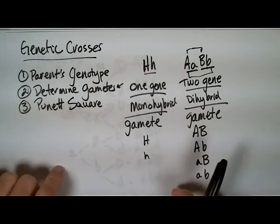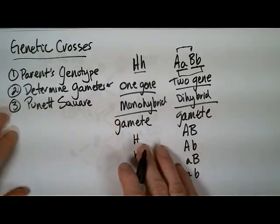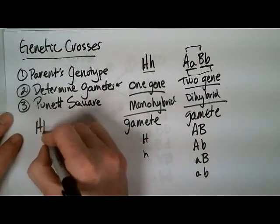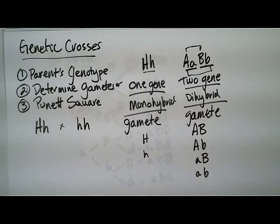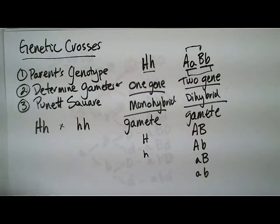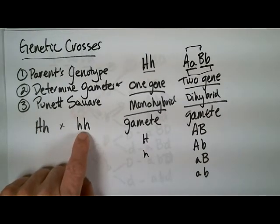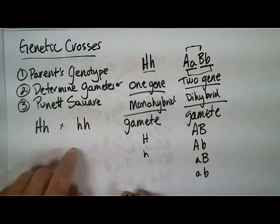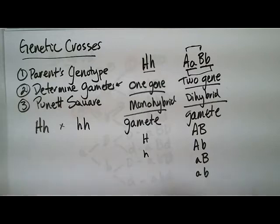So once we have our gametes, the next step is putting them into the Punnett square, or otherwise coming up with the combinations. Let's say my cross is between a heterozygote that has Hitchhiker's Thumb mated with a homozygous recessive that doesn't have Hitchhiker's Thumb. Quite honestly, you should be able to look at that and go — it's going to be a 50% chance the offspring will have Hitchhiker's Thumb and a 50% chance they won't. The reason you should get to that point is it should be so second nature you can see it in your head.